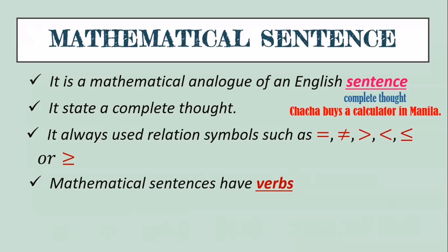A mathematical sentence always uses a relation symbol such as: equal, not equal, greater than, less than, less than or equal to, or greater than or equal to. Just like in an English sentence we have a verb — an action word — in a mathematical sentence we also have a verb. The relation symbols are our action words. For example, the mathematical sentence 'three plus six equals nine' — it states a complete thought.